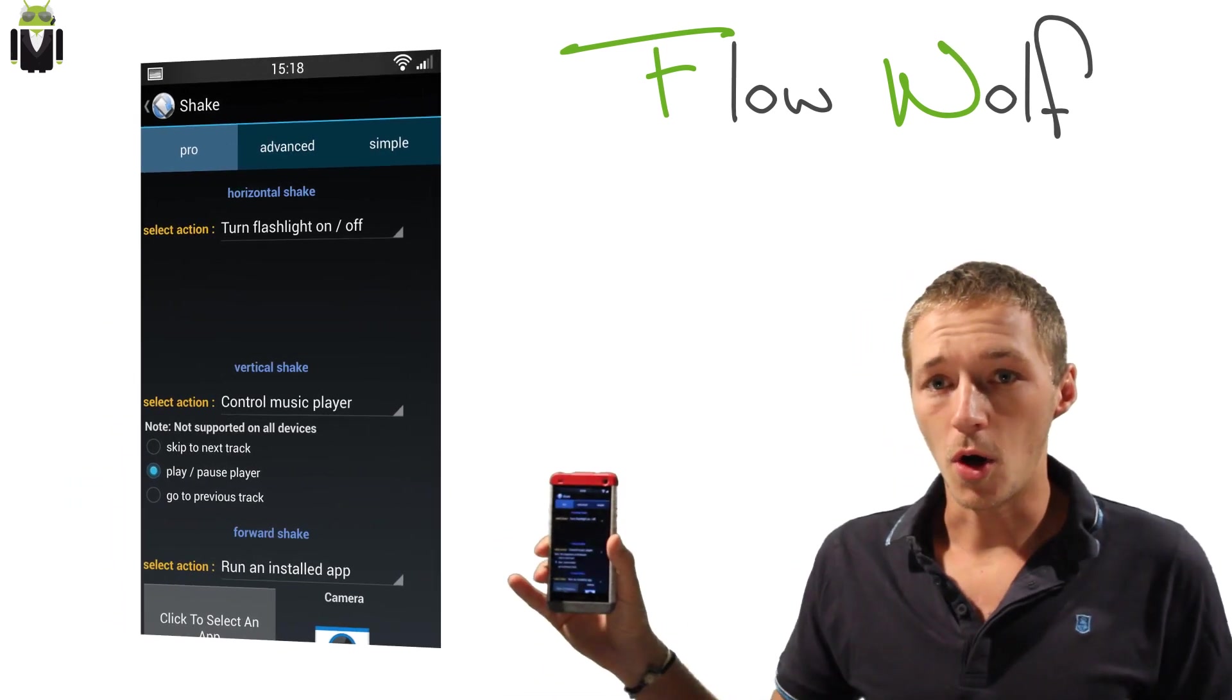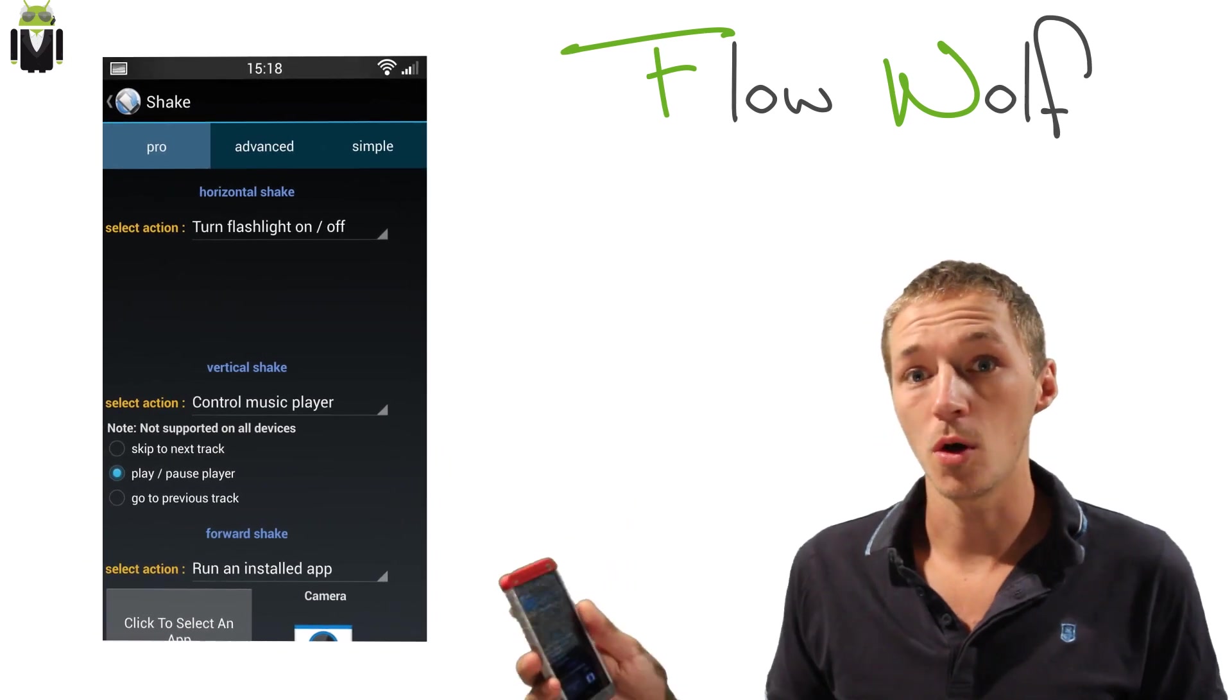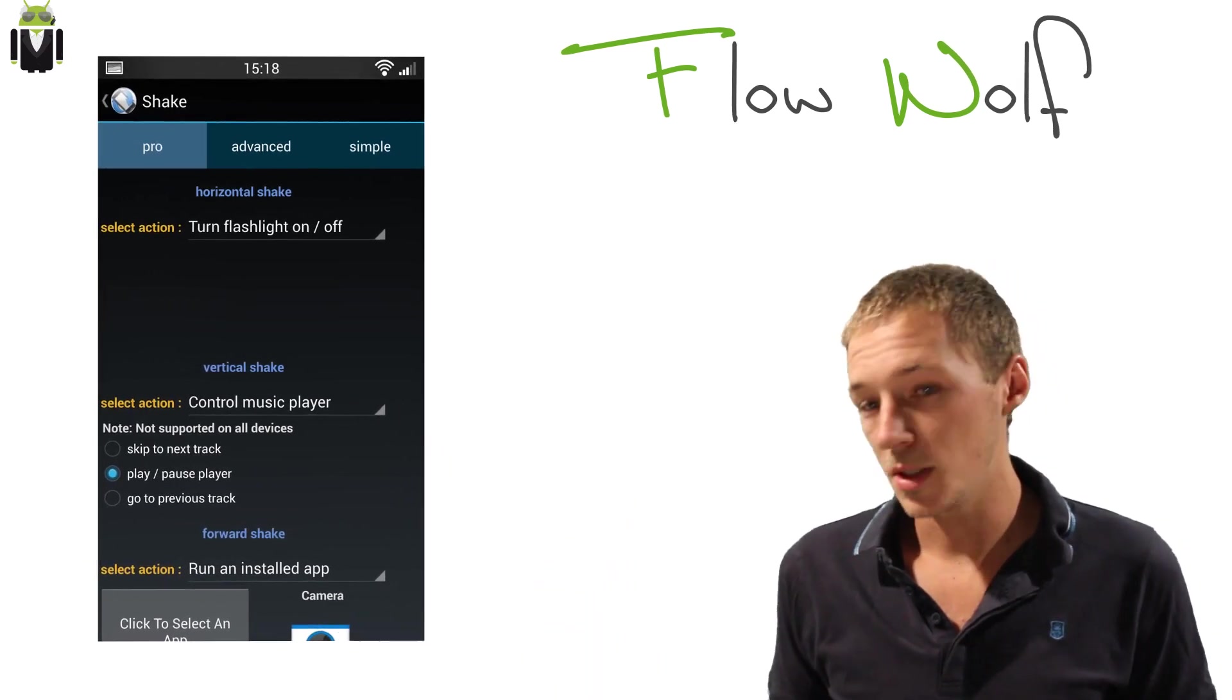I have chosen different things. The first one is for horizontal shake: turn on or off the flash. The second one is control music player, and the last one is run an application which is camera.